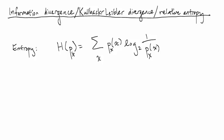I'm now going to talk about information divergence, which we will often abbreviate as just divergence, which is also called Kullback-Leibler divergence or KL divergence, which is also called relative entropy. What information divergence is going to give us is a way to measure how different two distributions are in terms of bits.